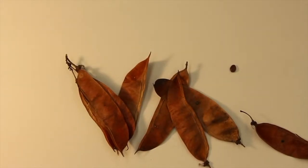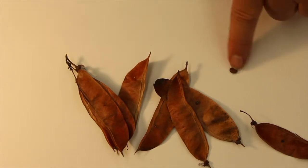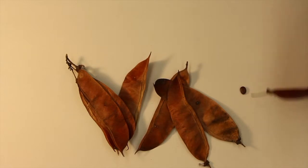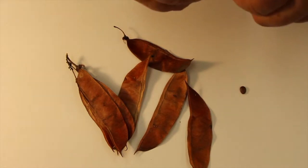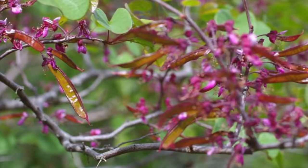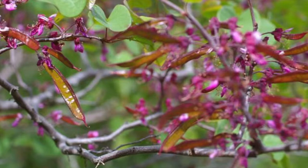Okay, what we're going to do first is physical dormancy, which is when the seed coat just will not allow water in so it can't germinate. This is redbud, which is a California native. It's a really nice little tree that has gorgeous magenta flowers in the spring.